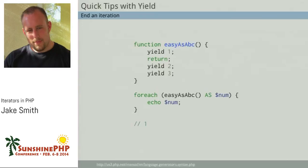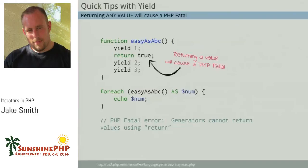If you want to end a generator early — if you've reached a point where something isn't what you want, or you found what you need and just want it to stop — you just do return. You can see yield 1, then return, and it stops — only outputting the number one. Don't put a value in your return or bad things will happen. If you put any value in the return, you'll get a PHP fatal error. To end your generator, just use bare return with nothing afterwards.